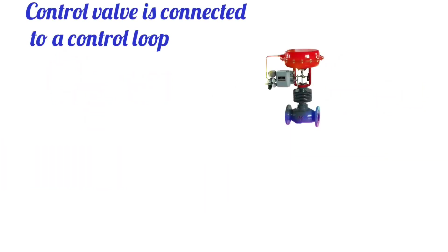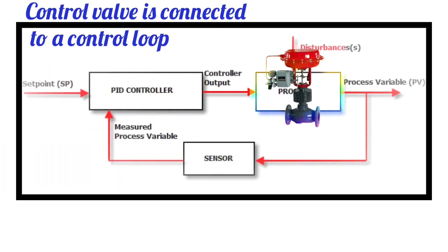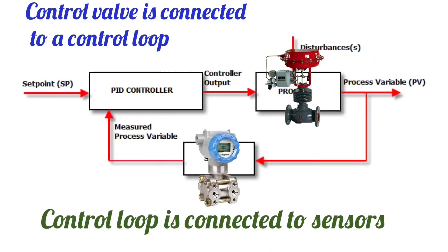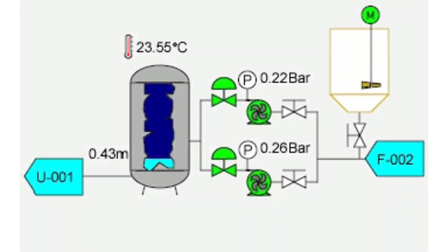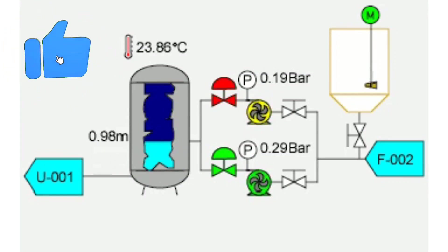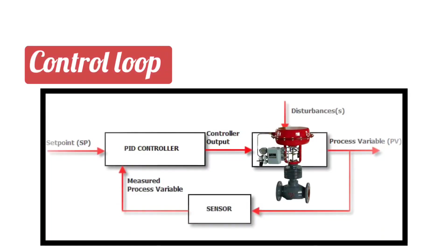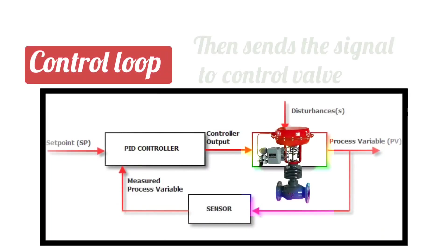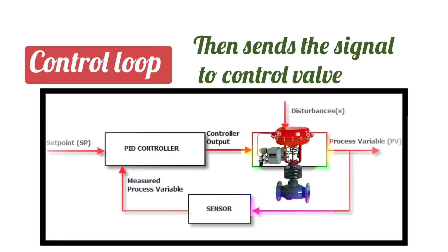The control valve is connected to a control loop, which is connected to sensors. These sensors measure the flow, pressure, and temperature of the fluid. The control loop then sends a signal to the control valve, which adjusts its position and regulates the flow of fluid.